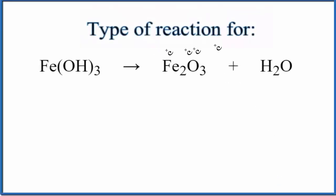In this video we'll take a look at the type of reaction for Fe(OH)₃ yields Fe₂O₃ plus H₂O. This is iron 3 hydroxide. It's breaking apart into iron 3 oxide and water.